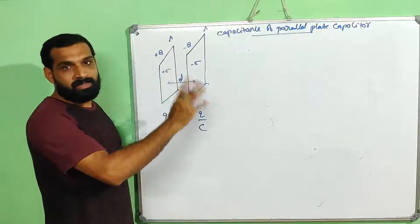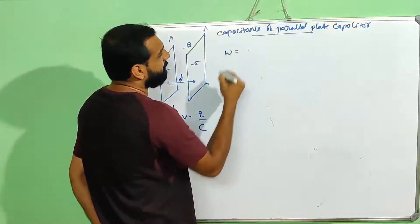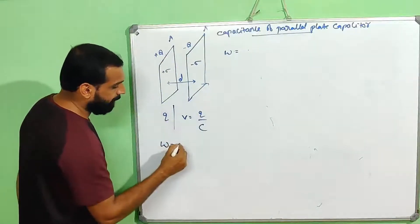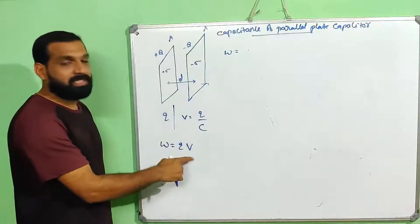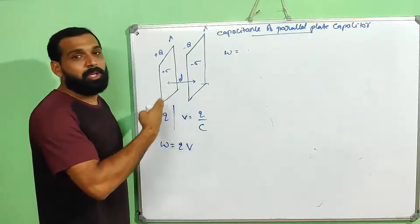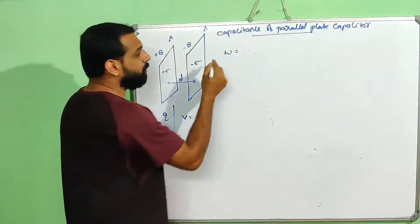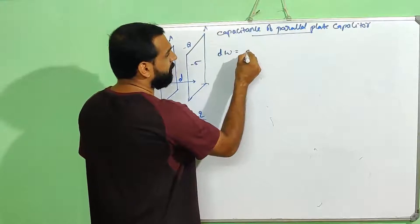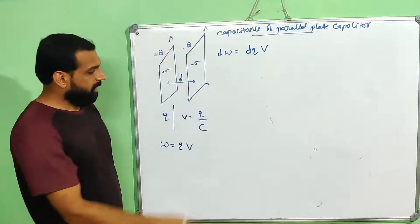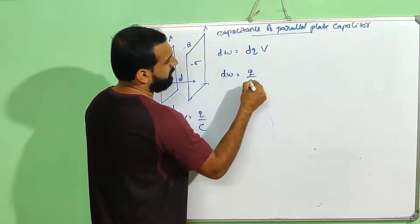That is Q equal to CV. When Q charge is already transferred and develops a potential V equal to Q by C, we have to do some work against this potential. Work done is given as the product of charge and potential: work done equal to Q into V. If we are transferring charges one by one — a DQ amount of charge — in order to transfer charge DQ we must do work DW equal to DQ into V, which is DW equal to Q by C into DQ.